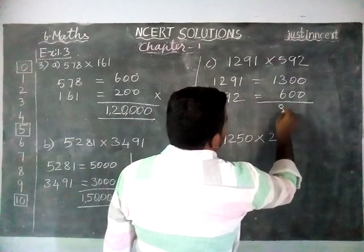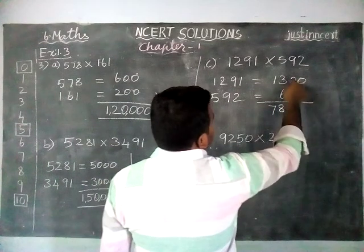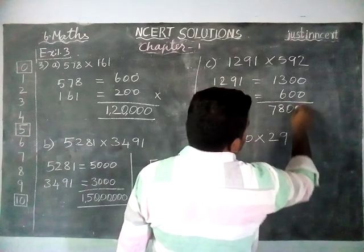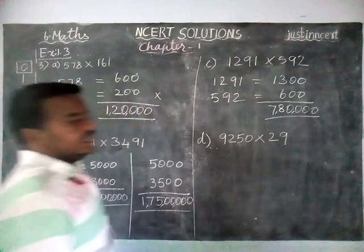6 times 3 is 18. Then 6 times 1 is 6, plus 1 is 7. There are 1, 2, 3, 4 zeros. So that's 7 lakhs 80,000.